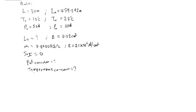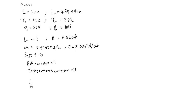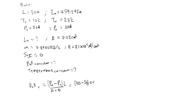The pull correction formula is: pull correction = (pull during measurement − standard pull) × length of tape, divided by (area × modulus of elasticity). Substituting the values: pull during measurement is 100 newtons, standard pull is 50 newtons, and the tape length is 30 meters.